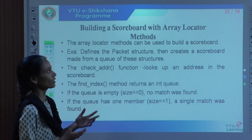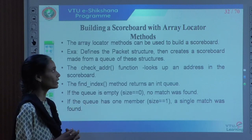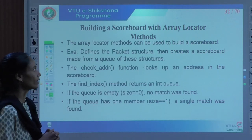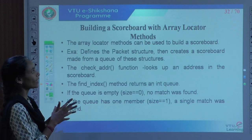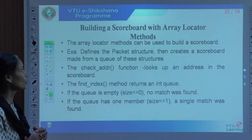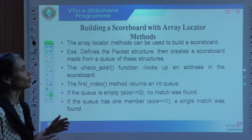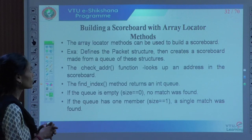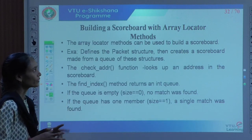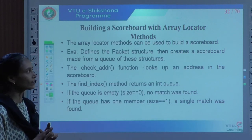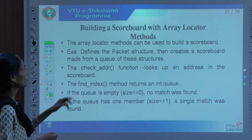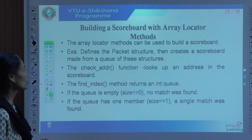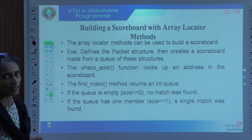If there is a match, we say there are no bugs in the design. If there is a mismatch, we can say there are bugs that need to be handled. With the help of these array methods, it will help us to code every block or every test component in the test bench. For example, the scoreboard is written using a class with the help of array locator methods — it defines the packet structure, then creates a scoreboard made from a queue of these structures.